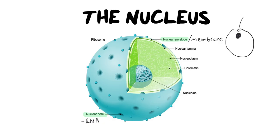Moving on to the next structure — the nucleoplasm. That is like a sister to cytoplasm. It's essentially a jelly-like filling to the nucleus; it gives it shape and allows things to be suspended and float. It also allows for chemical reactions to take place, and that's probably one of the most important functions — those chemical reactions that take place in the nucleus.